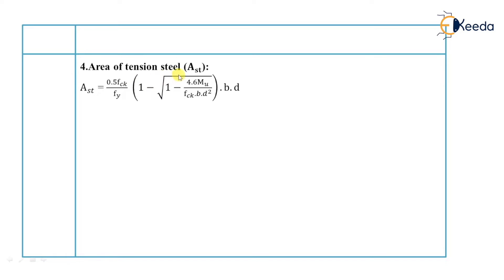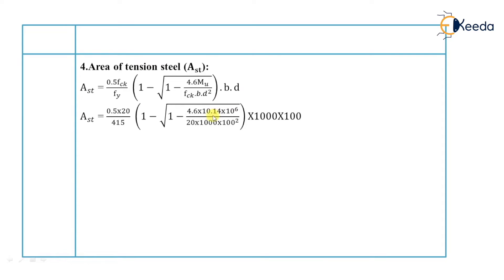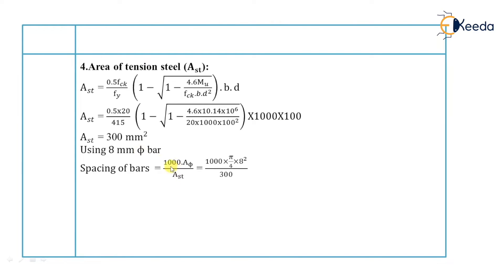The most important step is finding the area of tension steel, AST. The formula is AST = (0.5 fck / fy) × [1 − √(1 − 4.6 Mu / (fck × B × d²))] × B × d. With Mu = 10.14 × 10⁶ N·mm, B = 1000 mm, and d = 100 mm, AST equals 300 mm². Using 8 mm diameter bars, spacing equals 1000 × (π/4 × 8²) / 300 equals 167 mm, so we provide 160 mm.